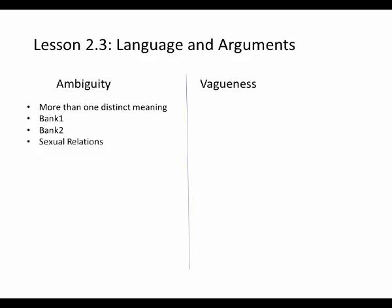Now, vagueness is a different sort of animal. Vagueness is where you have a word or phrase that, even within one kind of meaning, doesn't have precise conditions of application. That is, we know how to use the word as it's intended, but it's not intended to have exact conditions where you apply it. For example, the word 'tall.'